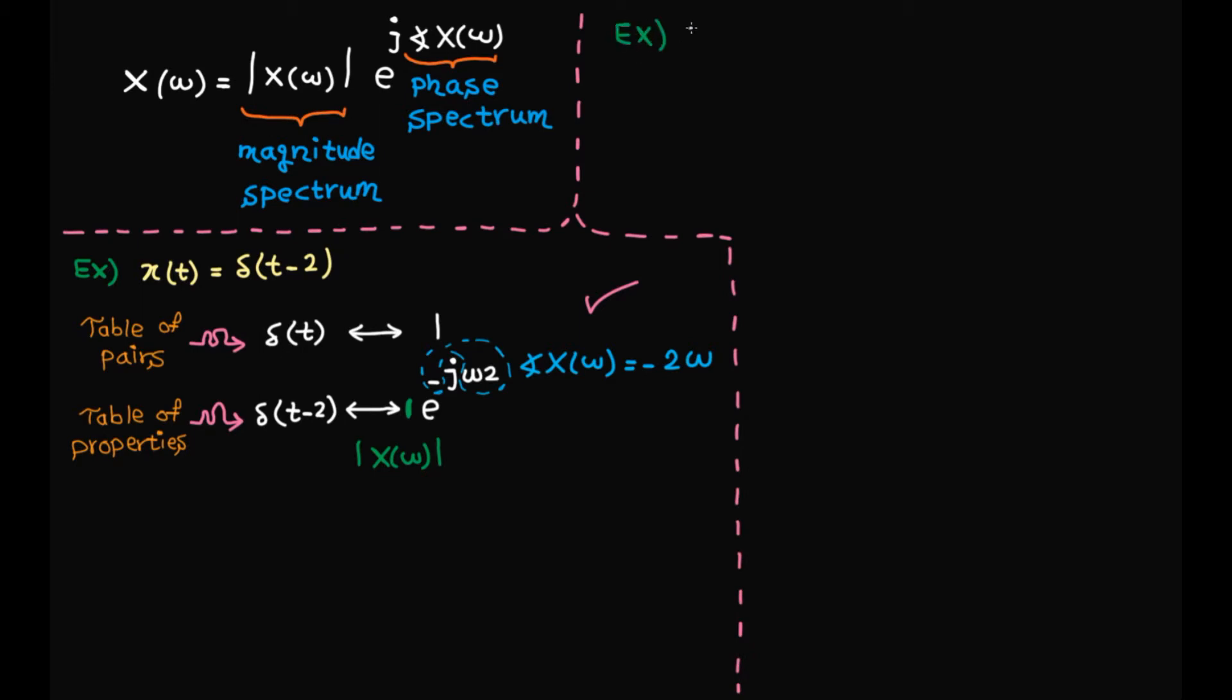Next example: what are the magnitude and phase spectrum for this signal? Again, based on the table of pairs, here is the Fourier transform of delta(t). Also, based on the time shifting property, these are the Fourier transform of the shifted delta functions. Then we need to add them up.